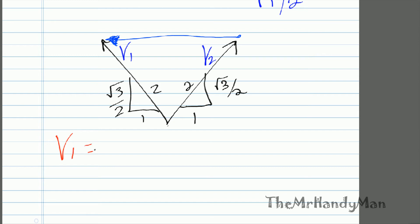v1 is going to equal, we can see that it goes in the x direction if we were to use this coordinate system. x, y, and the x direction v1 goes negative i plus √3 over 2 j hat.